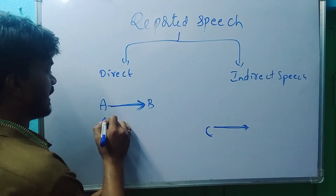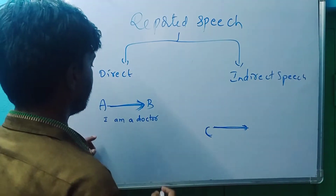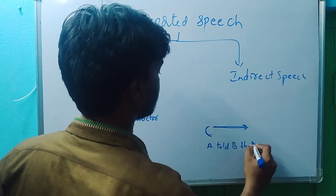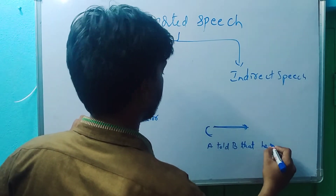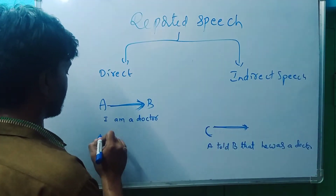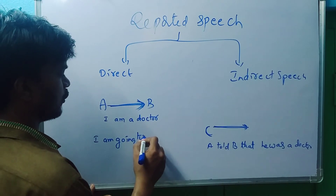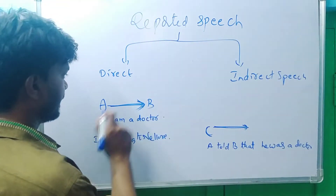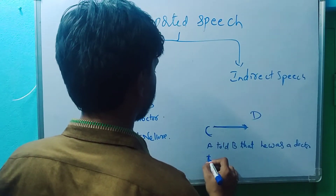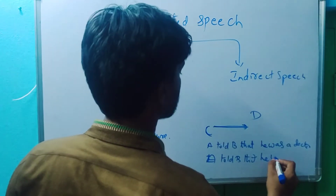For example, 'I am a doctor' — A says this. C and D are listening. The indirect speech form is: A told B that he was a doctor.